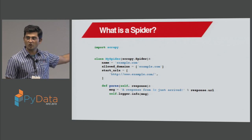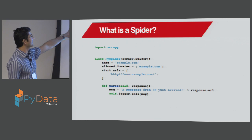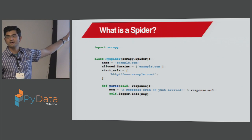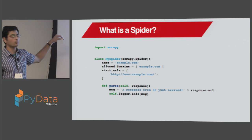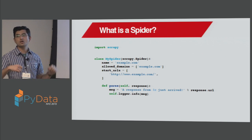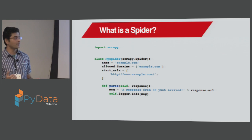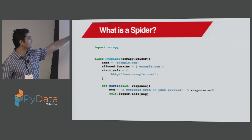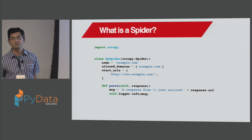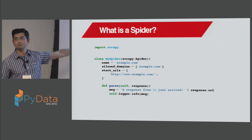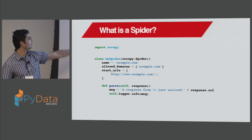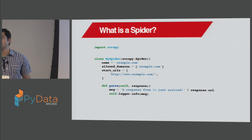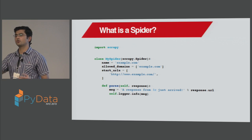Once the response arrives — how does it get executed? Once you run the Scrapy spider, it goes to the start URL and starts making requests. Once the response arrives, the parse function gets executed. So first part is making the request, second part is parsing the response. Here you write code to parse the response. This basic spider is just logging a message, but you can do a lot more in parsing — for example, do XPath and get the data. We're going to do that anyway.